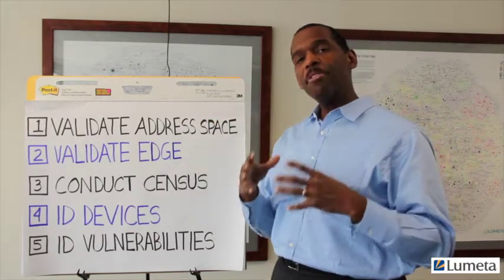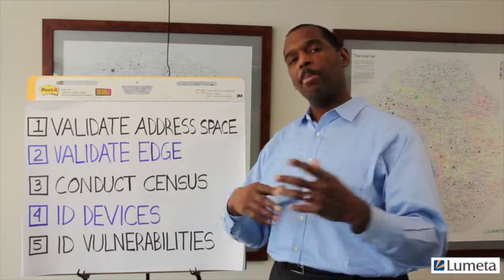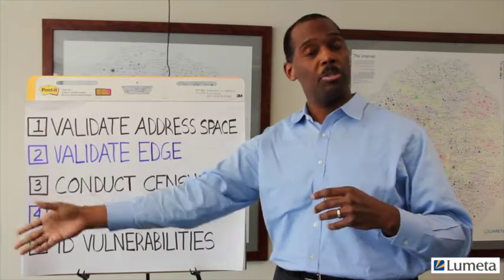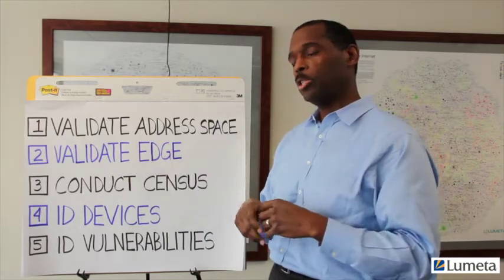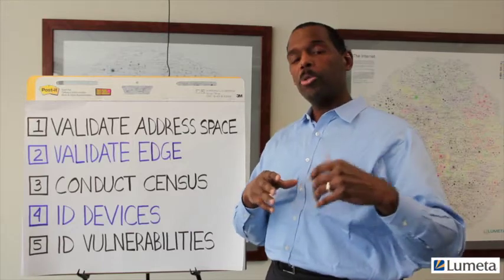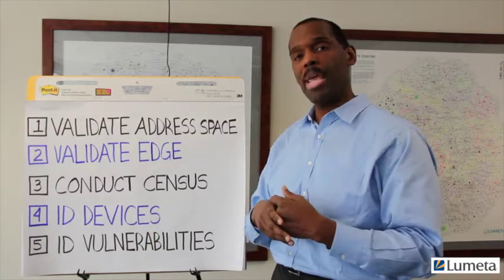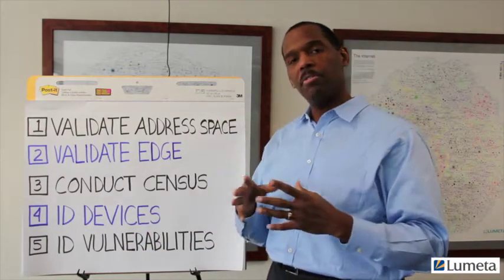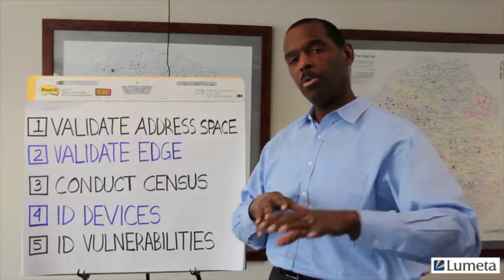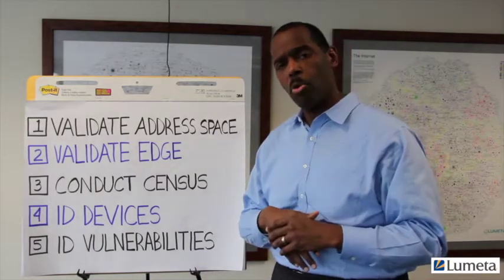Step number two, you have to validate the edge of your infrastructure. Organizations are very dynamic and changing all the time. A part of your infrastructure may be getting spun off as part of an M&A transaction. You might make a change at the edge to allow a partner, and then when that relationship goes away, that connection remains. So validating the edge of your network — knowing the piece you're managing versus the pieces that are the internet or part of a different network infrastructure — is very important to understand.